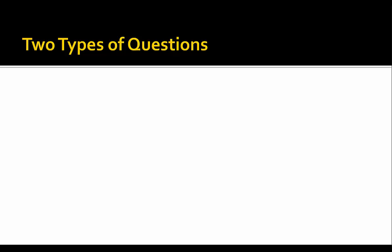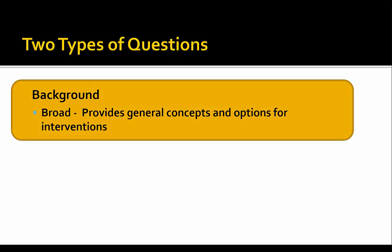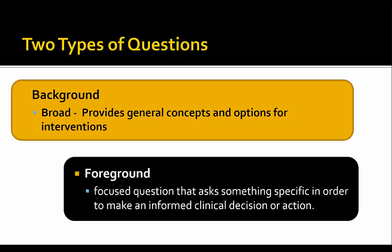Keep in mind that in evidence-based practice there are two types of clinical questions, and to be effective you need to be able to do each type well. First, you'll need background questions — broad-based questions to get a general understanding of the concepts involved in a problem or condition, as well as a general understanding of what intervention options are out there. Once you have that, you move to the second type: foreground questions. These are very focused, tend to address a particular type of problem, and usually look at a particular intervention in comparison to another. Remember, it's only with a foreground question that you can effectively use the PICO format.